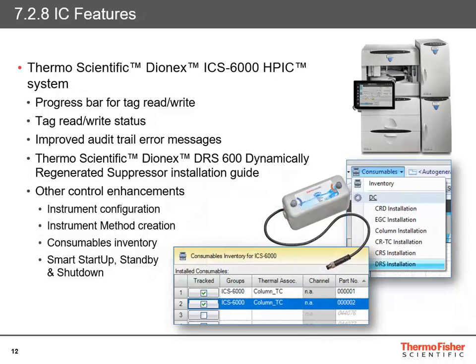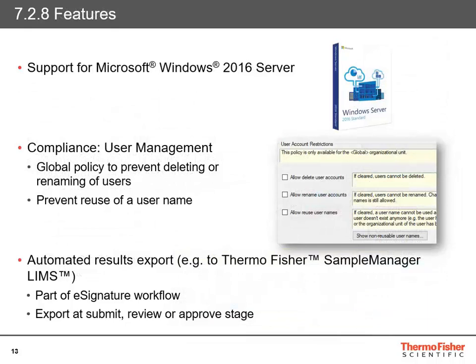Other enhancements for control of the ICS-6000 have been made in instrument configuration, creation of the instrument method, handling of the consumables inventory, and Smart Startup, Smart Standby, and Smart Shutdown are now supported. Chromeleon 7.2.8 has been tested and validated on the Windows Server 2016 operating system. It also introduces new compliance policies: a global policy to prevent unit administrators from deleting or renaming users has been added, and a new policy preventing the reuse of a username is now available. This ensures usernames cannot be reused even if previously assigned, renamed, and deleted — guaranteeing all usernames will be unique for the entire lifetime of the software. Version 7.2.8 also introduces the ability to clone access groups and roles, making it easier to create a new role or access group that only differs in a few options from an existing one.